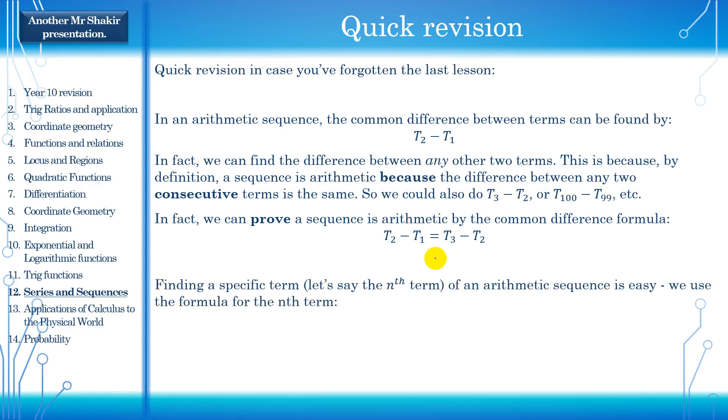Now, if you wanted to find a specific term of an arithmetic sequence, we'd use a very simple formula, a plus n minus 1d. If you're finding, for example, the hundredth or the 10th term, we'd sub in n is equal to 10. In other words, every time we see n, we put 10 in. That would become t10 is equal to a plus 10 minus 1d, which would be 9. So a plus 9d. And that's it, really. Let's just do some harder questions now.